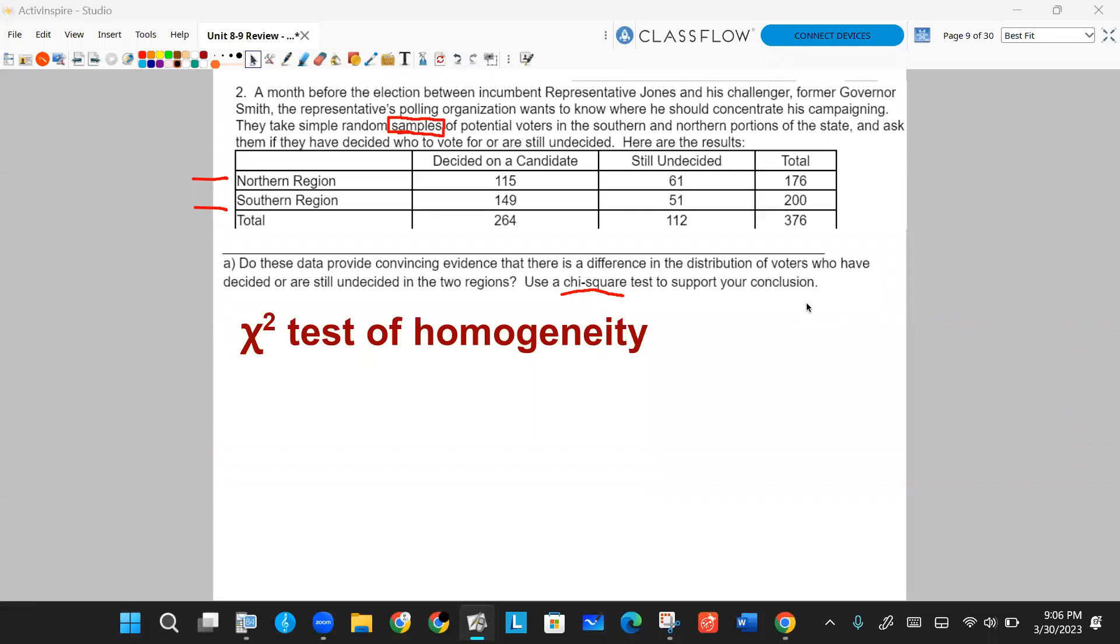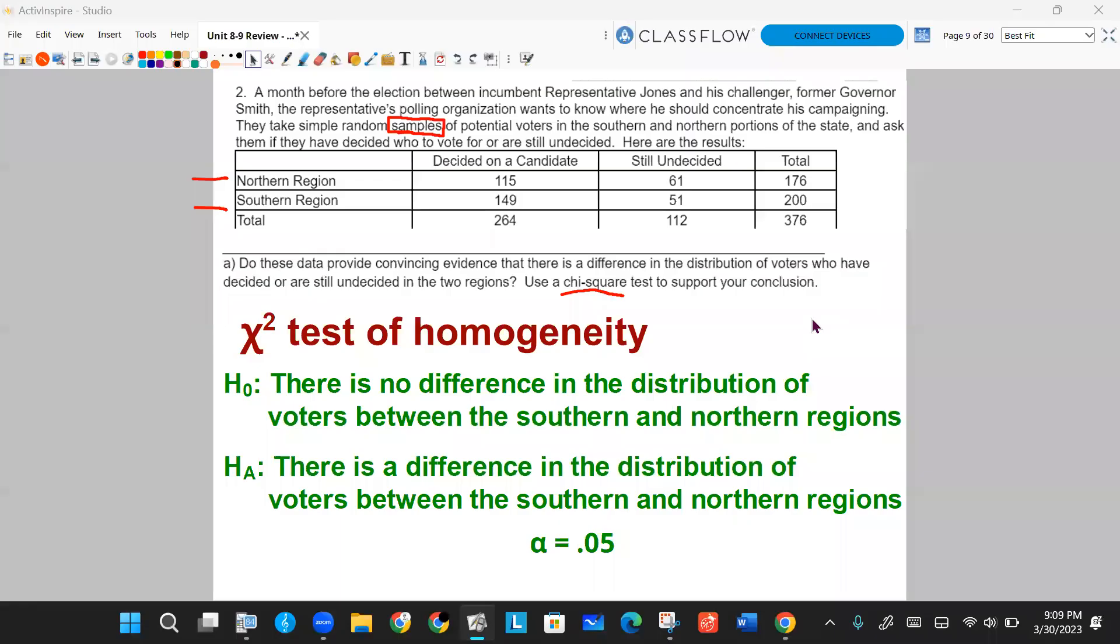So your null and alternative hypothesis has to do with the comparison of the two distributions and are they the same or are they different? So set up your null and alternative hypothesis. Pause the video and you can try it. Then unpause it and I'll have gone over them. Here we go. The null is there is no difference in the distribution of voters between the southern and northern regions, while the alternative is there is a difference in the distribution of voters between these two regions. And we're going to use our standard alpha is 0.05. Hopefully that matches what you have.